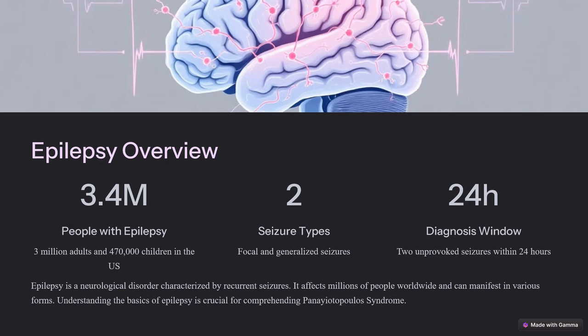In the United States, around 3 million adults and 480,000 children have epilepsy. Epilepsy is a neurological disorder that occurs when neurons transmit suddenly altered electrical signals in the brain, disrupting the normal neural pathway. When this happens, seizures can occur. Epilepsy is diagnosed when there is a recurrence of two unprovoked seizures within a 24-hour period. Seizures can come in many forms and vary from person to person.